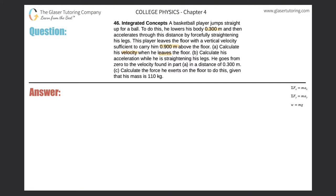Let's create a simple picture. Here we have our basketball player — let's call him Hakim Elijah. He leaves the floor with an initial velocity that we don't know — that's what we're asked to find. It tells us how high he jumps: 0.9 meters. So that's his change in displacement, 0.900 meters. When he reaches the top of his motion, any object at its highest point in the y-direction has a velocity of zero.